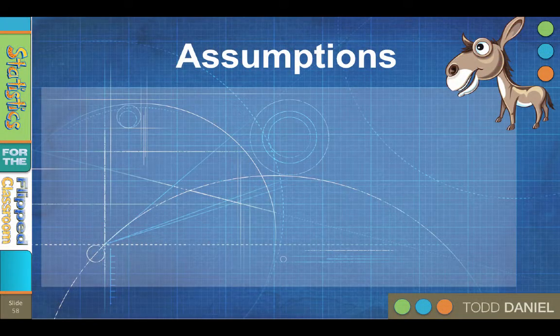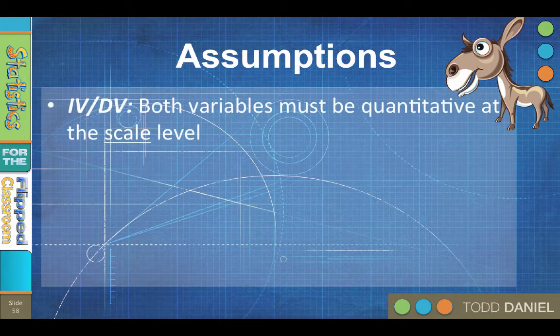Pearson's correlation is used to assess the strength and the direction of a relationship between two variables. There is not necessarily an independent variable and a dependent variable, but you will use one variable — the one on the x-axis — to predict the other variable, the one on the y-axis. So the variables would be similar to an independent variable predicting a dependent variable. Both variables must be quantitative at the scale level and continuous.